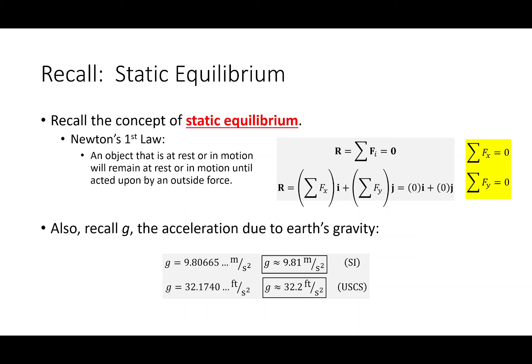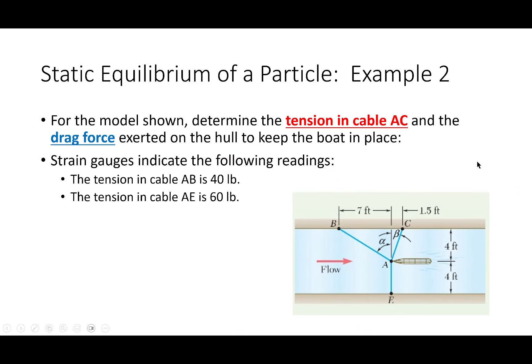Don't forget the acceleration due to gravity — if you need to take a mass and multiply it, use 9.81 m/s² in SI or 32.2 ft/s² in US customary units. Last time we applied each equation and got a two-by-two system of equations, which we solved using matrix algebra. Maybe we don't need to do that every time. I'll show you that with this problem — I have a boat in a channel or canal.